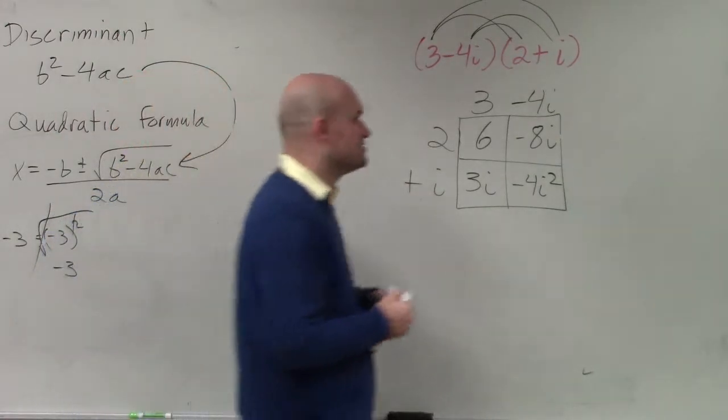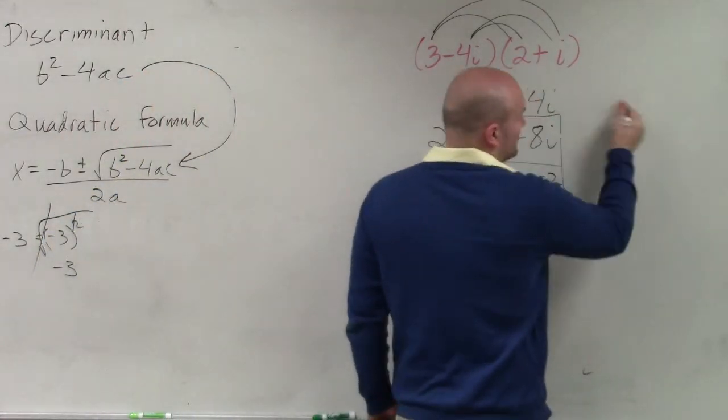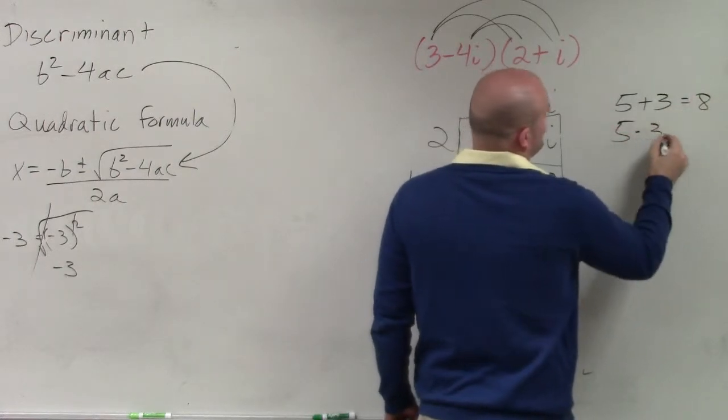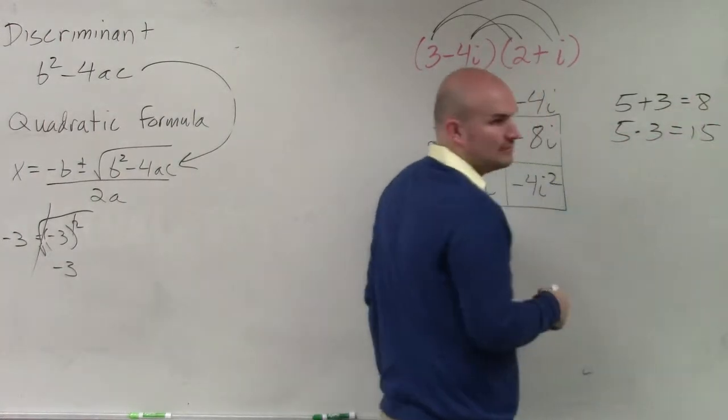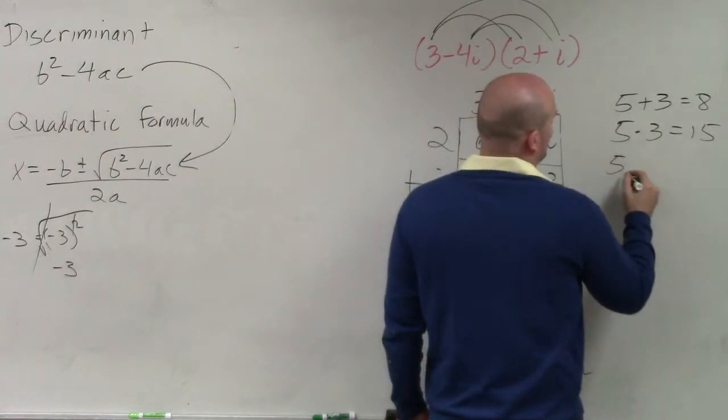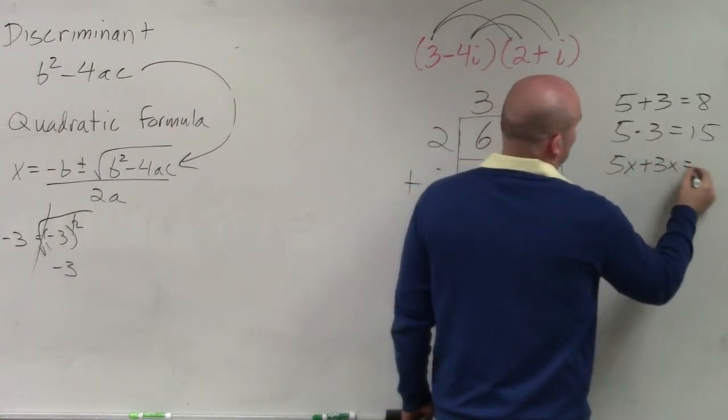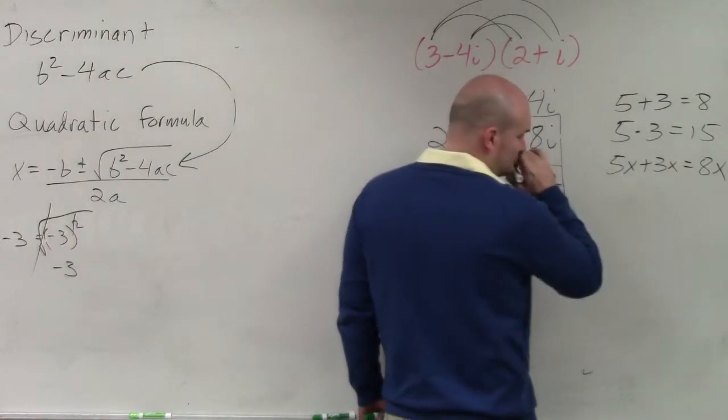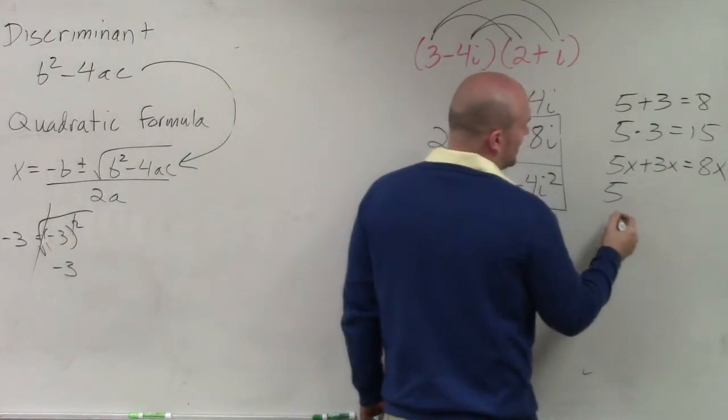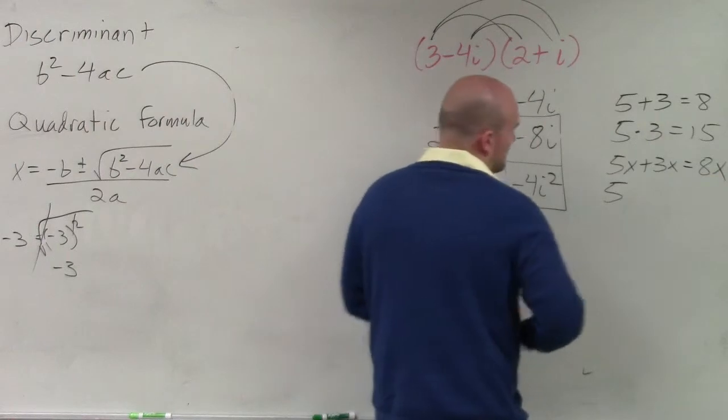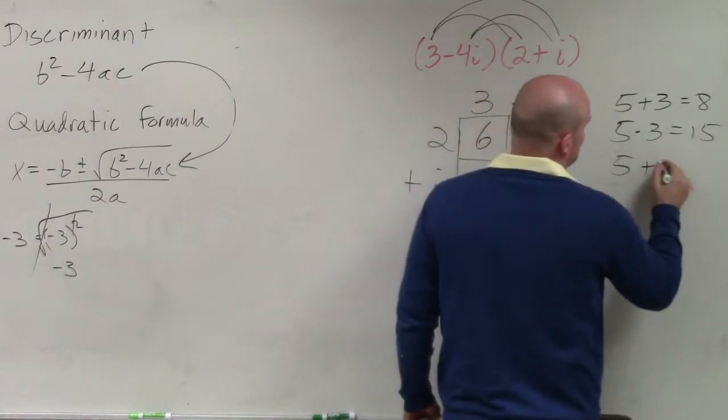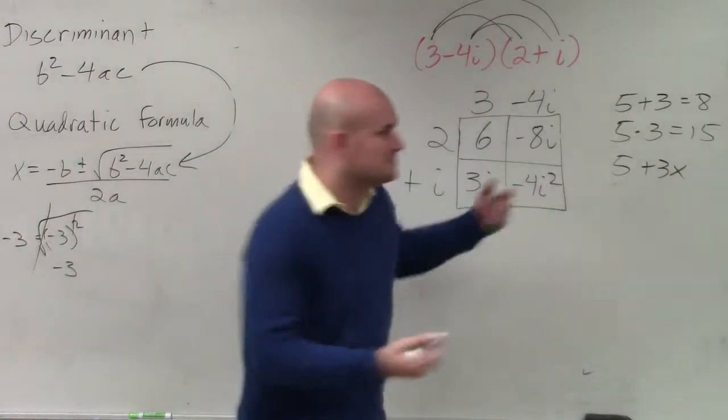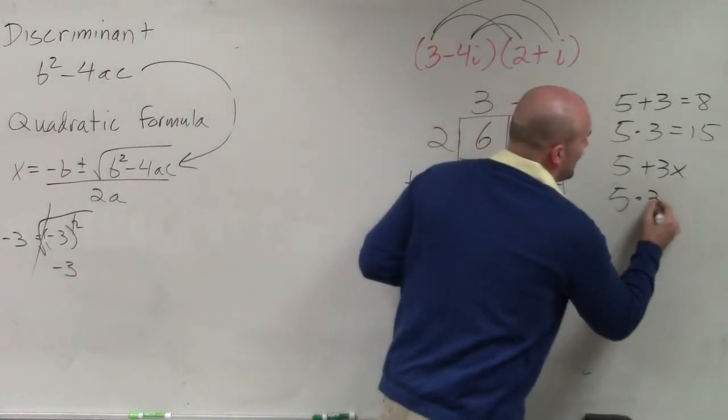Now, I did forget to mention, ladies and gentlemen, we talk about 5 plus 3 is equal to 8, 5 times 3 is equal to 15. 5x plus 3x is equal to 8x. However, you cannot do—let me put it this way—you cannot do 5 plus 3x. You can't combine those. But you can multiply that.